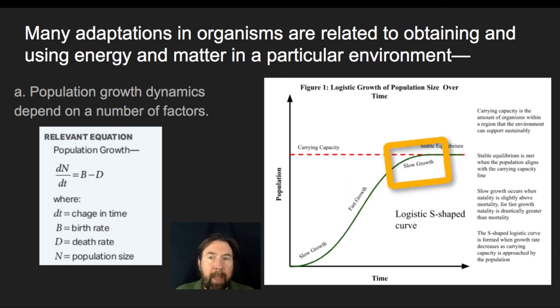And then eventually the slowing of the growth is going to be where the death rate is starting to come up. And when we get to stable equilibrium, we're going to estimate that the birth rate and the death rate are going to be roughly equal to each other at the end when the population reaches its carrying capacity or levels off within that environment.